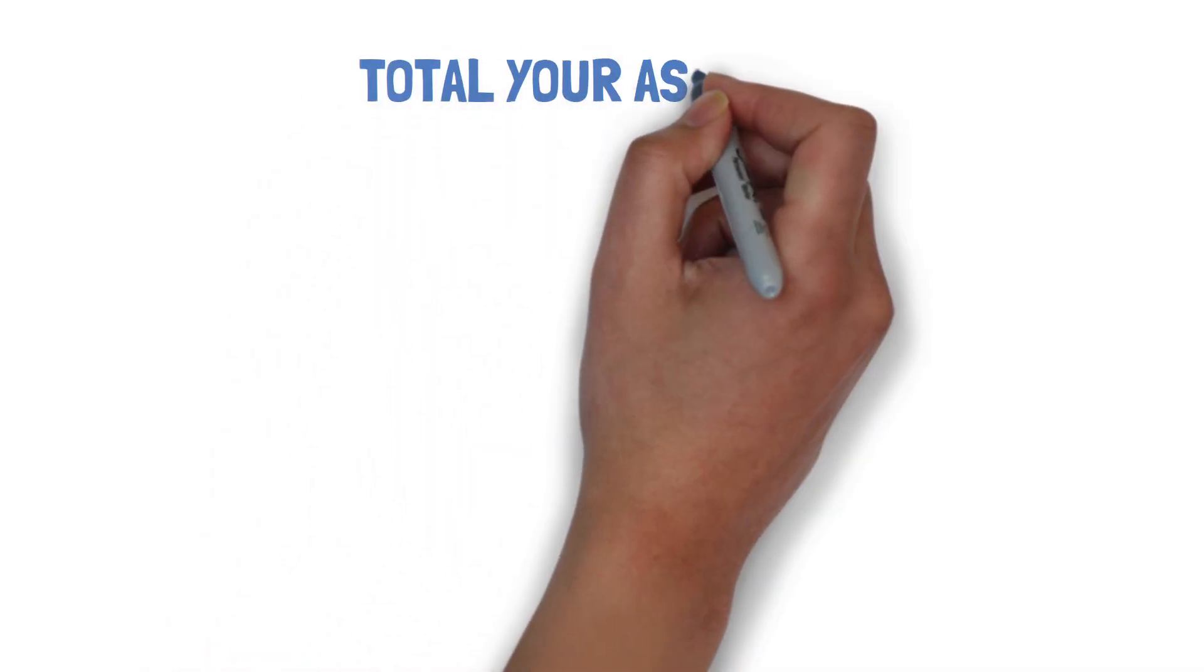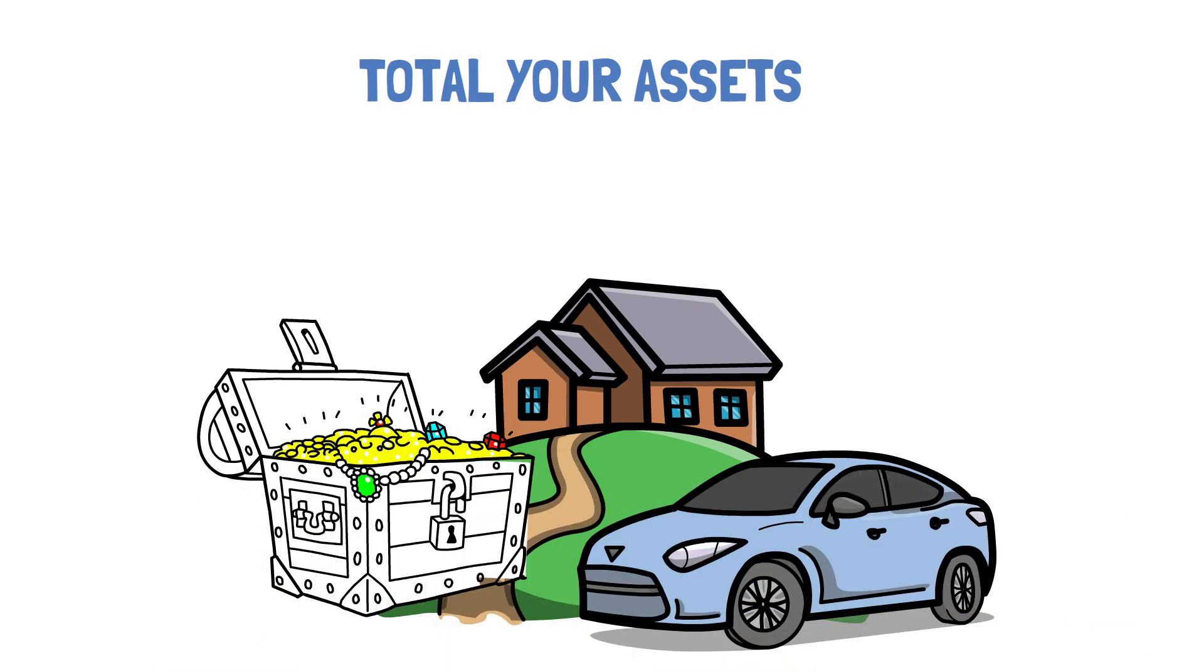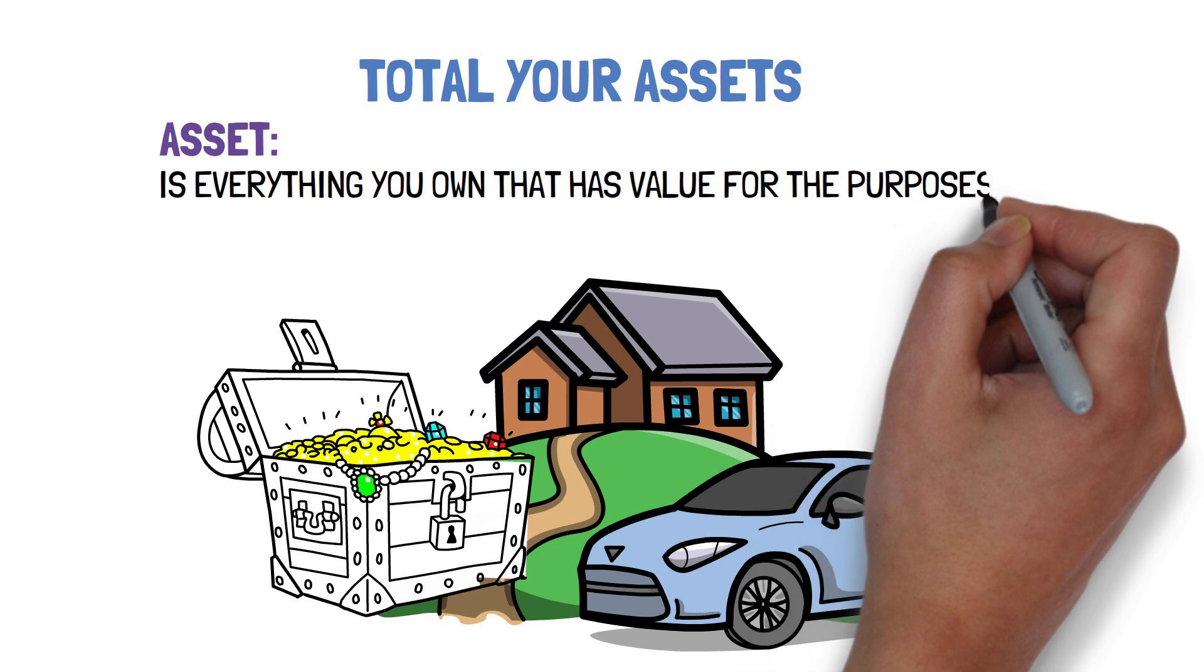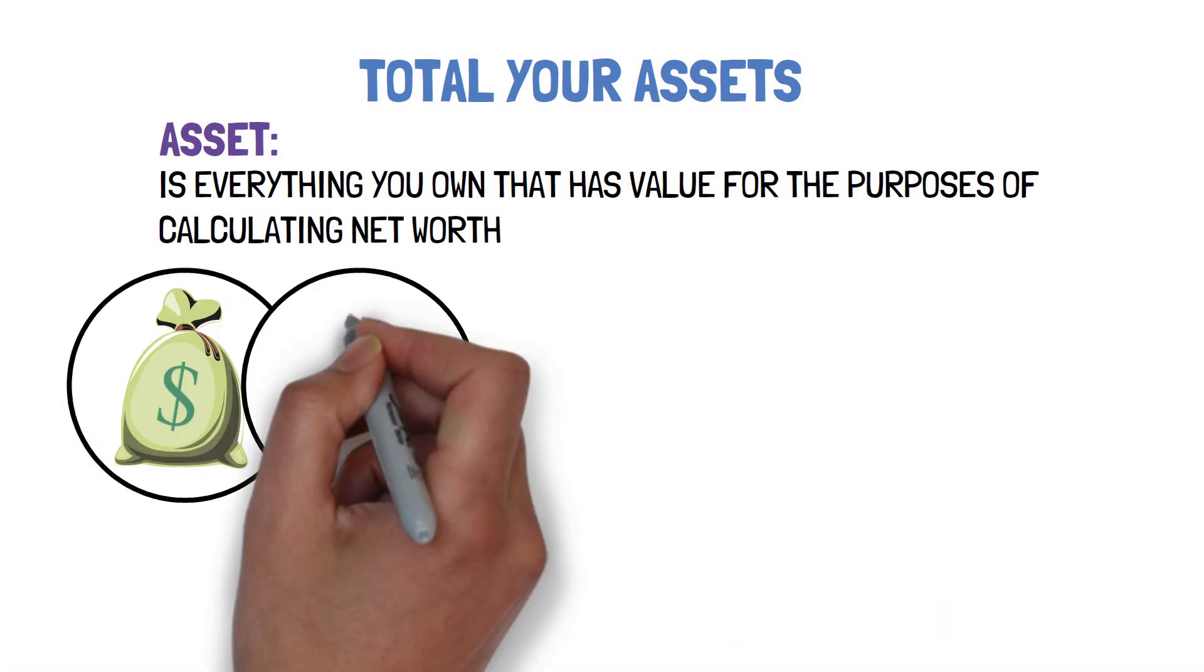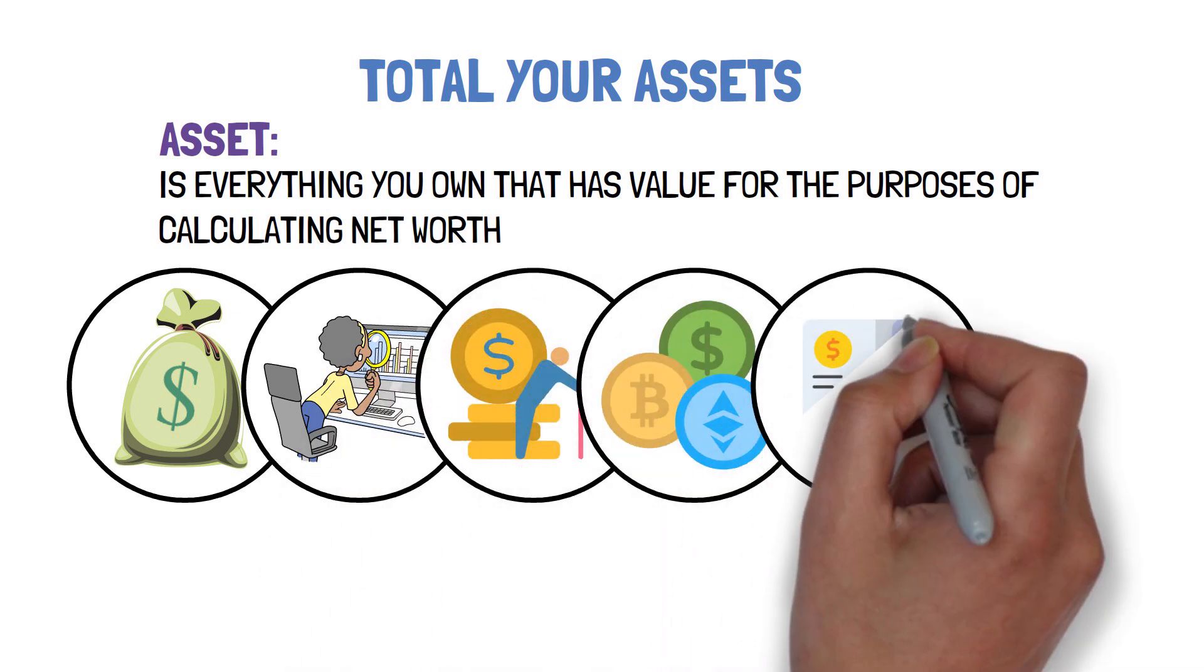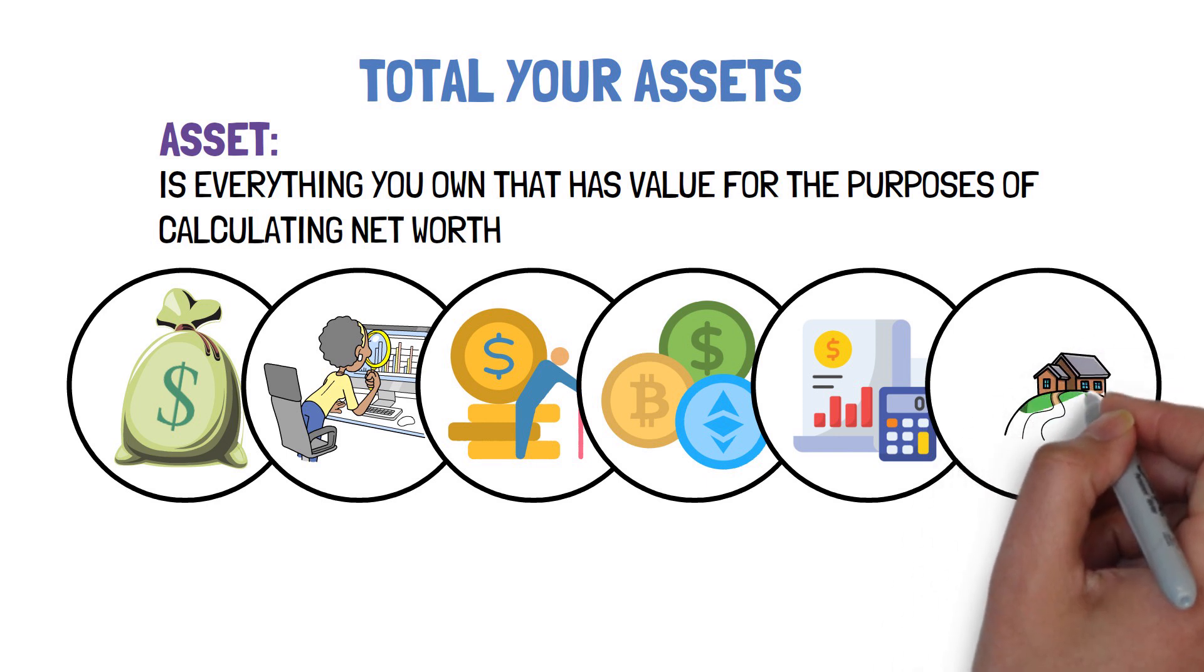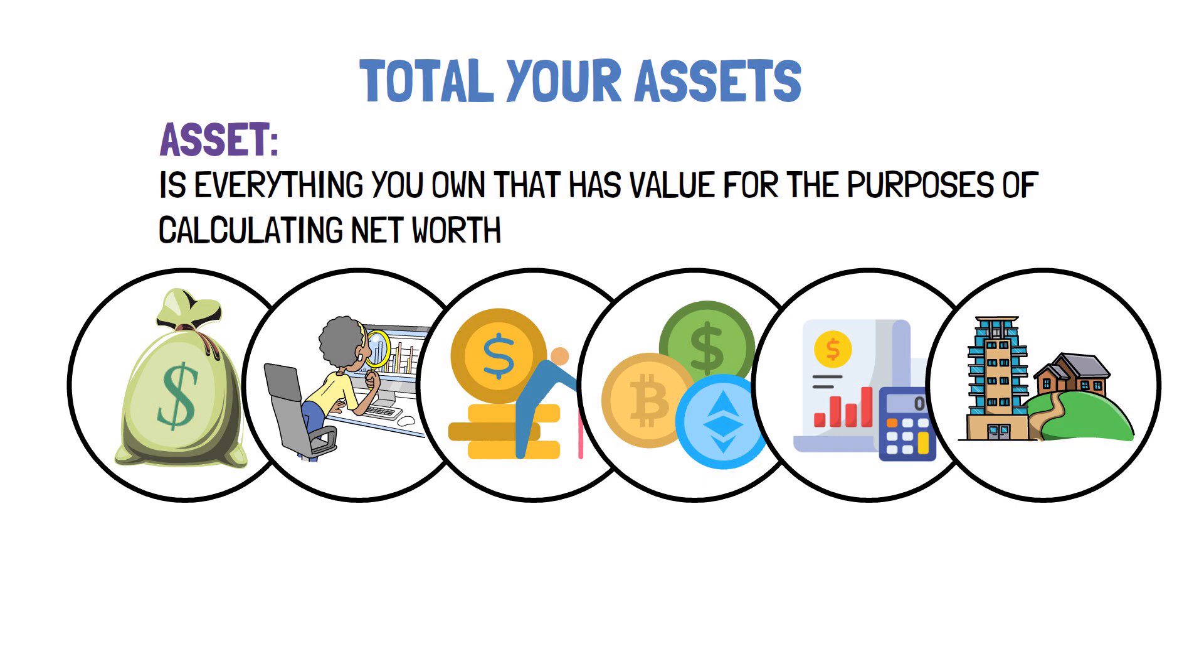The first step is to total your assets. This can be perplexing depending on how many you have. An asset is everything you own that has value for the purposes of calculating net worth. This includes any cash you have, as well as funds or stocks in brokerage accounts, retirement accounts, cryptocurrencies, and financial institution accounts. Include whatever real estate equity you have, whether it is in your home dwelling or an investment property.